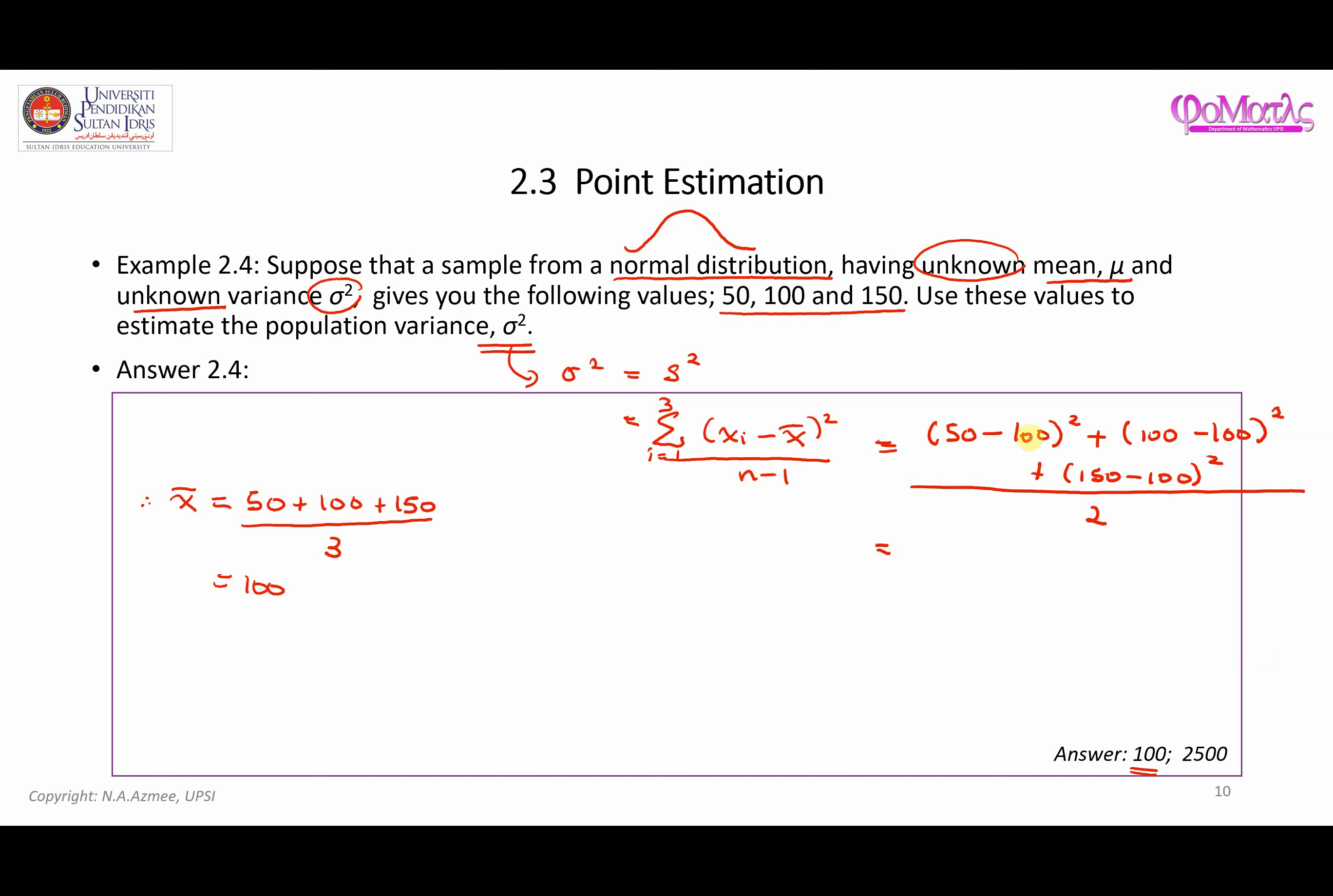So for this one, 50 minus 100 is negative 50. When you square it, it's going to be positive. So it will be equal to 2,500 plus 100 minus 100, 0. So we have 0 over there. And for this one, 150 minus 100 is 50 squared, which is going to be equal to 2,500 over 2. So you have 5,000 over 2, which is equal to 2,500. So this is the answer here, 2,500. The population variance is equal to 2,500.